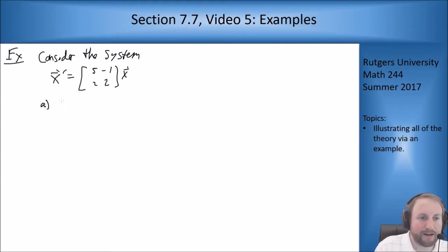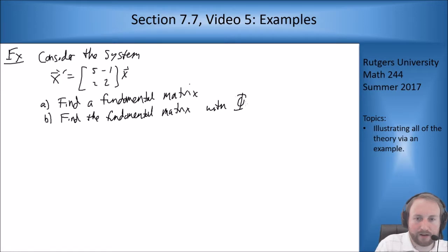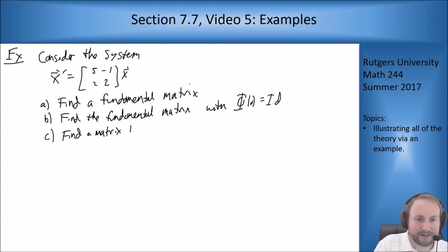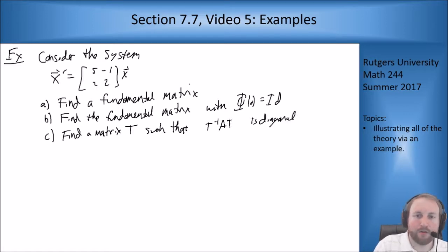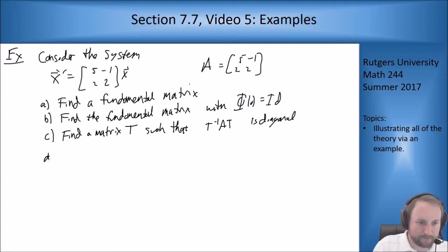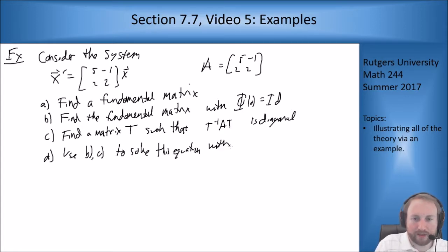So I want to: (A) find a fundamental matrix, (B) find the fundamental matrix with φ(0) equal to the identity, (C) find a matrix T such that T inverse A T is diagonal, where A is the matrix [[5, -1], [2, 2]], and (D) use parts B and C to solve this equation with x(0) equals [2, 3].